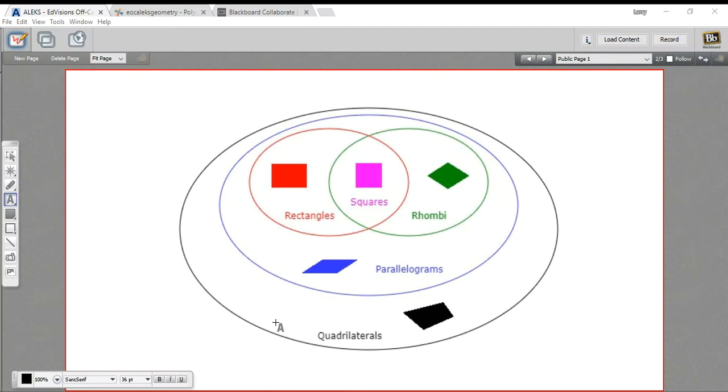Today we are looking at classifying some of the quadrilaterals. We've got a little map here, and this big circle that contains all of these other circles is the quadrilateral circle. To get in the circle, all you have to do is be a polygon with four sides. That's all a quadrilateral is. Quad means four, lateral means side.